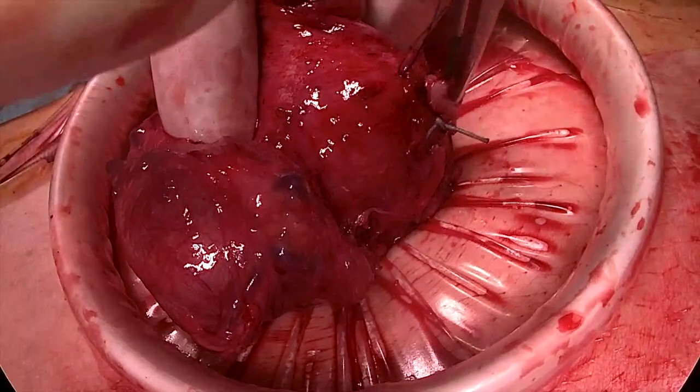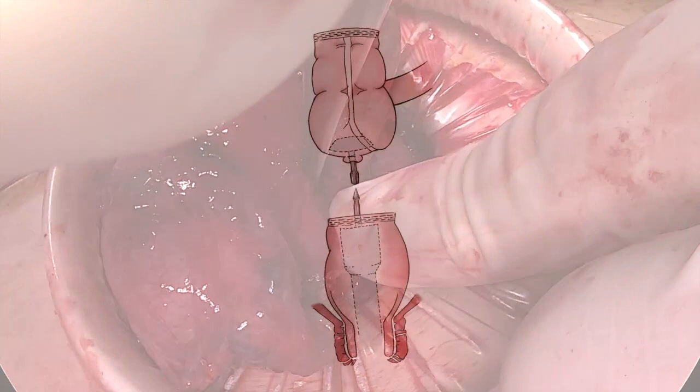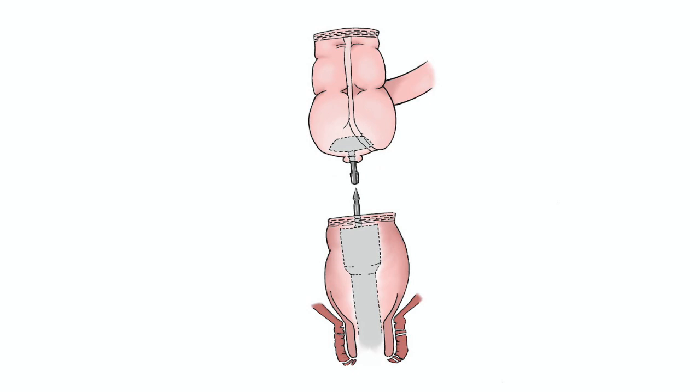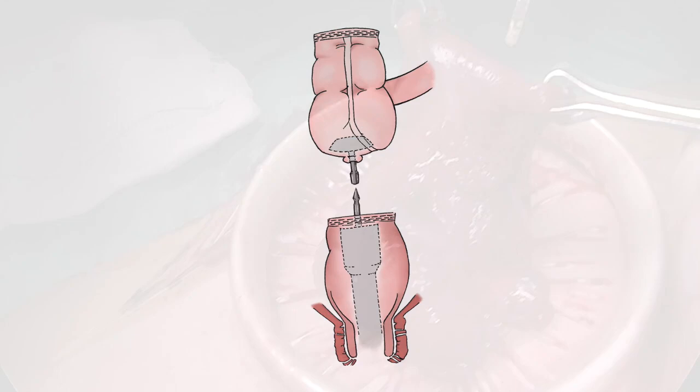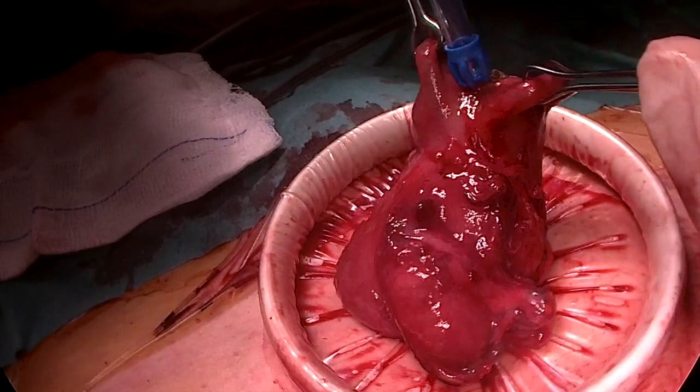The operation is completed by the fashioning of an anti-peristaltic cecorrectal anastomosis with a circular stapler. After a small incision on the cecum, a manual purse-string suture is created and the circular anvil inserted.